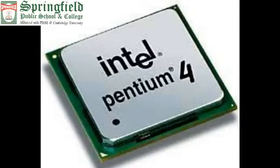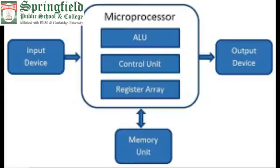A microprocessor is a small chip but a very powerful chip. It is called the brain of a computer. All instructions are given to the computer with the help of the microprocessor. All the programming and instructions are written inside it. It is very small — just the size of our fingertips.